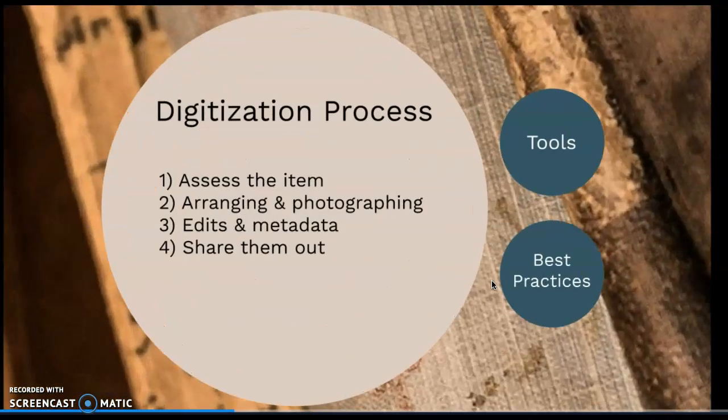How does the digitization process work? First, we have to assess the item. Curators would choose which collection items should be widely shared through digitization. Since the process to create surrogates can be time-consuming, prioritizing manuscripts for treatment is an important first step. Also, the condition of the physical item has to be considered to ensure that the digitization project won't damage the item, and that imperfections can be viewed and noted in a digital surrogate.